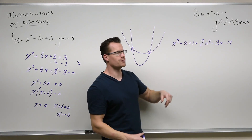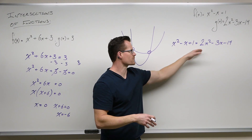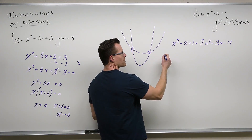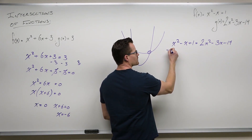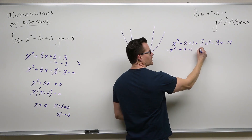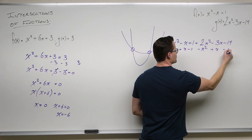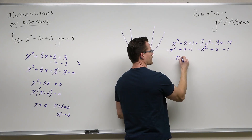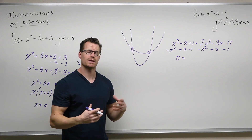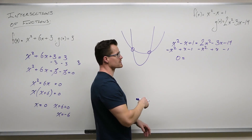Because that coefficient is larger, we're going to do that — we don't want our first term to be negative. So we're going to subtract x squared, add x, and subtract 1. That gives us a zero on one side, which is really nice if factoring or the quadratic formula is necessary.